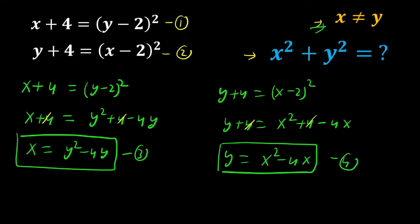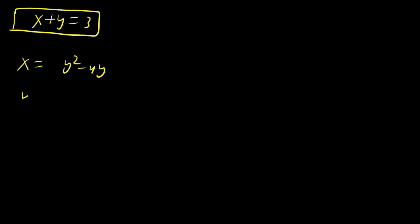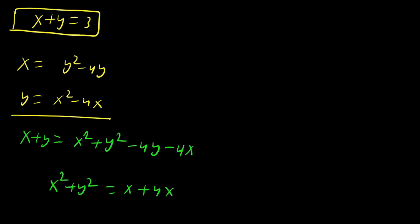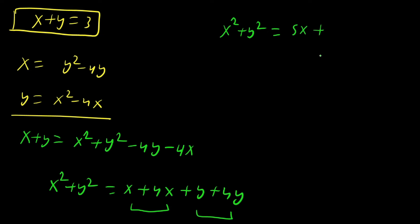Now looking at equations three and four again: x equals y squared minus 4y, and y equals x squared minus 4x. Adding both equations: x plus y equals x squared plus y squared minus 4y minus 4x. Rearranging: x squared plus y squared equals x plus y plus 4x plus 4y, which equals 5x plus 5y.